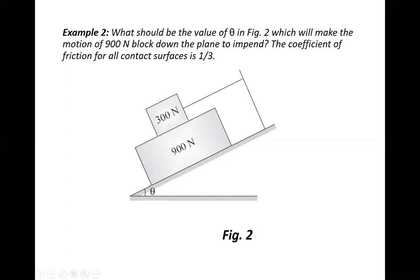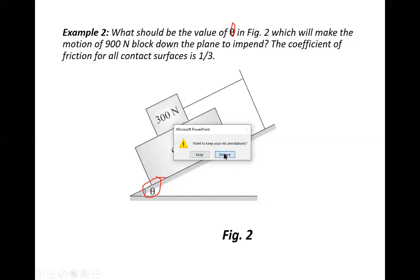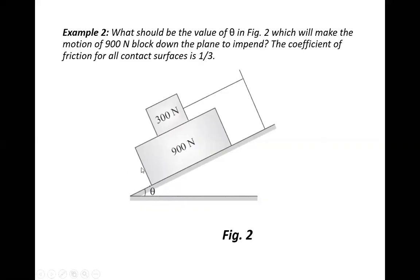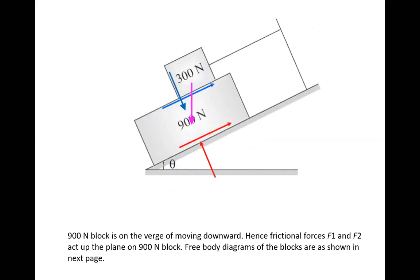We need to find the value of theta. Since there is no external force acting on it, the self-weight is sufficient to slide the body downwards. The 900 Newton block is heavy so it slides downwards.